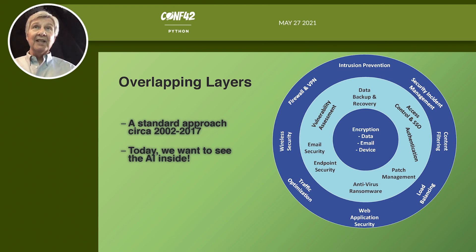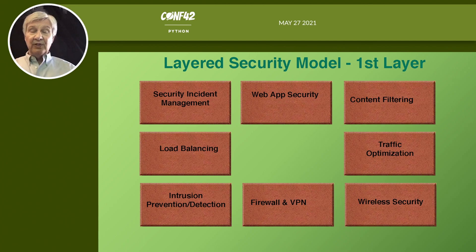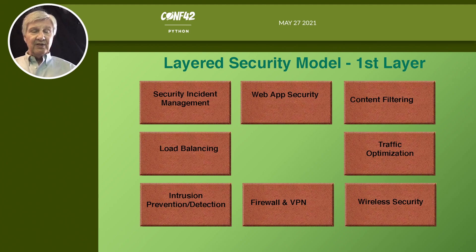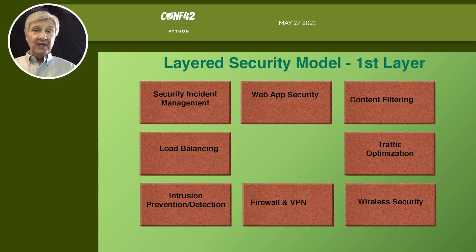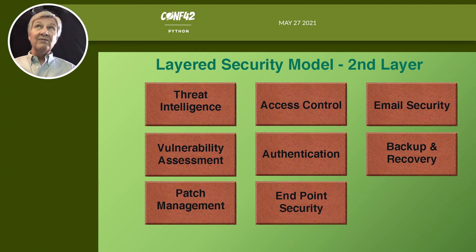Today, we want the AI inside. Artificial intelligence gives us insight into how data moves and how humans on the network interact. Once it learns normal behavior, it can alert us to anything abnormal. The first layer of any security model includes security incident management, web app security, content filtering, traffic optimization, firewall VPN, intrusion prevention and detection, and load balancing — all indicative of a sound first layer.